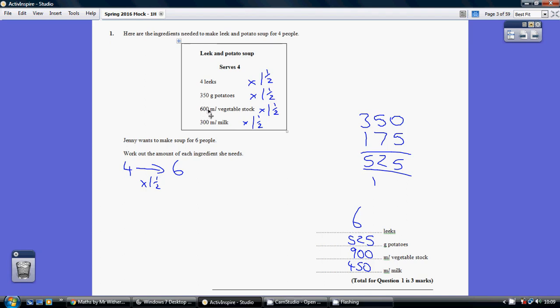600, and then half the lot, 300. 600 and 300 is 900. And one and a half lots of 300 is 300 and 150, which equals 450.